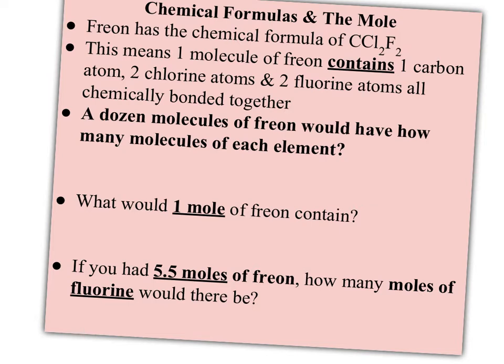But if we think about that a little further, if you had a dozen molecules of Freon, now how many atoms of each element would you have? Well, if one molecule had one carbon atom, then a dozen molecules, or 12, should have 12 carbon atoms, and it should have two dozen, or 24, chlorine atoms, and also two dozen, or 24, fluorine atoms.